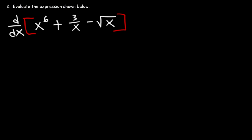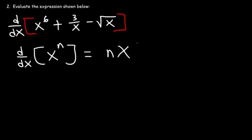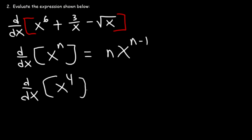Number two: evaluate the expression shown below. Pause the video and work on it. For this problem, you need the power rule: the derivative of x to the n is n times x to the n minus 1. For example, the derivative of x to the fourth power is 4x cubed.